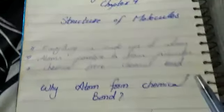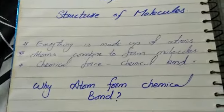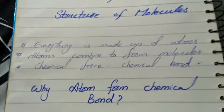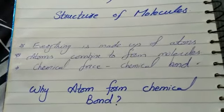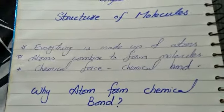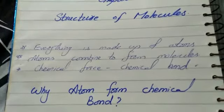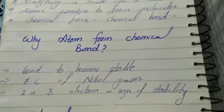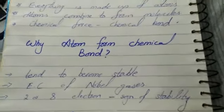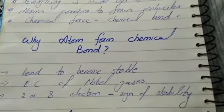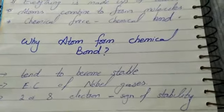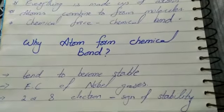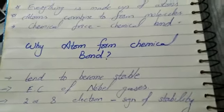But first — why do atoms need to create a bond? Why do they need to form a molecule? The answer is that everything in our universe tries to be stable. So atoms also create bonds and molecules in order to become stable.